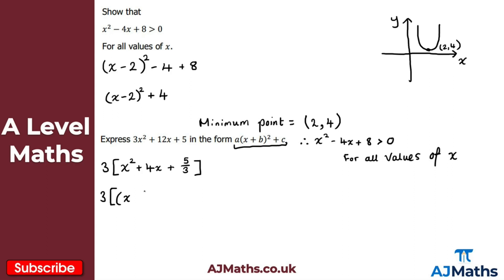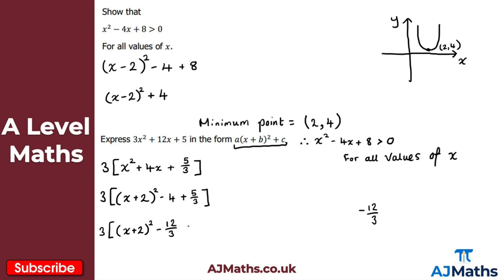Leaving the 3 on the outside, we complete the square on the quadratic inside. That's going to be (x + 2)² — we subtract that value squared, so minus 4 — and we still have the plus 5/3. Cleaning this up, we keep the 3 on the outside, and inside we have (x + 2)² and then minus 4 plus 5/3. Writing minus 4 as minus 12/3 gives us minus 12/3 plus 5/3, so that's 3 lots of [(x + 2)² minus 7/3].